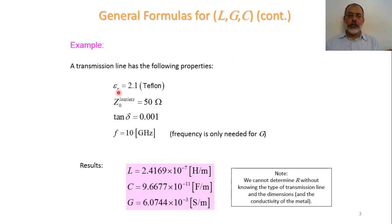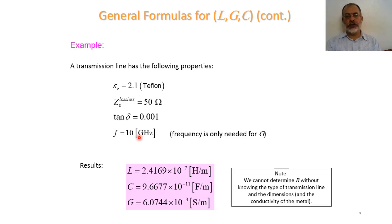As an example, consider a transmission line with Teflon dielectric where ε_r = 2.1, characteristic impedance Z₀ = 50 Ω for the lossless case, tan δ = 0.01, and operating frequency of 10 GHz. We want to find the equivalent inductance, capacitance, and conductance per unit length. We obtain L as Z₀ multiplied by √(μ₀ε₀ε_r), where √(μ₀ε₀) is effectively 1/(3×10⁸) and √ε_r is √2.1.